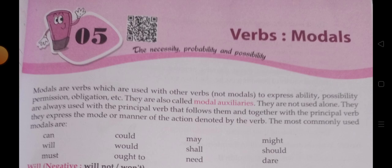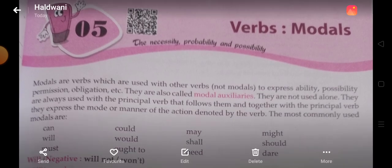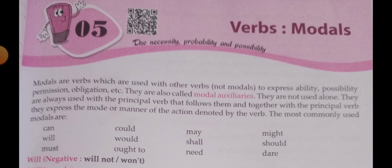Will is never used with the first person in the interrogative. Now, 'shall' — negative is 'shall not' or 'shan't'. Shall is similar to will in expressing the sure future with the first person. To ask, advise, suggest, or request with the first person 'I' or 'we' in the interrogative.